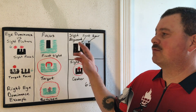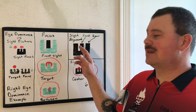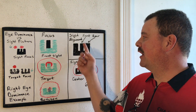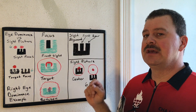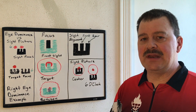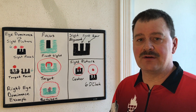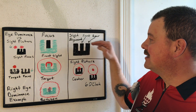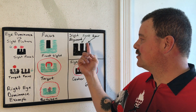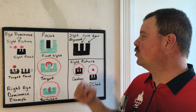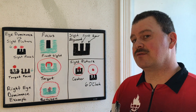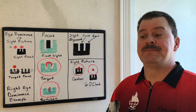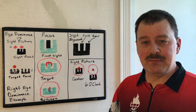Sight alignment refers to the mechanical alignment of the rear notch compared to the front post. A common recommendation for sight alignment with iron sights is even height and even light — talking about the light bars between the front and rear sight. So even height and even light will equal aligned sights for most people.